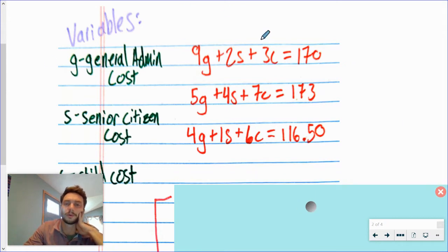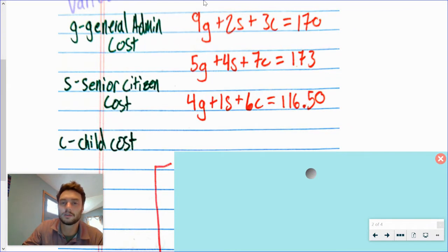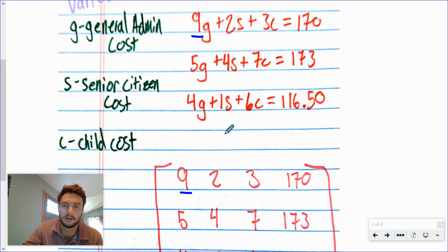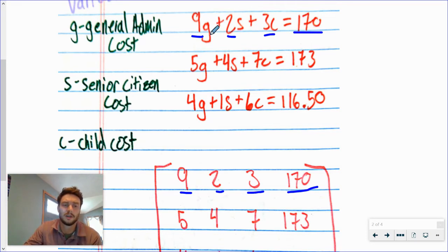Hopefully that should be pretty straightforward. This example is the same structure repeated — they're all in order, all talking about your three variables, and nothing really wild happens. So then we need to take these values and plug them into our matrix. You're just taking these almost exactly as you see them: nine, two, three, 170 for the first row — just dropping the variables, addition signs, and equal signs. So you won't take variables or equal signs, just the coefficients and the constant.